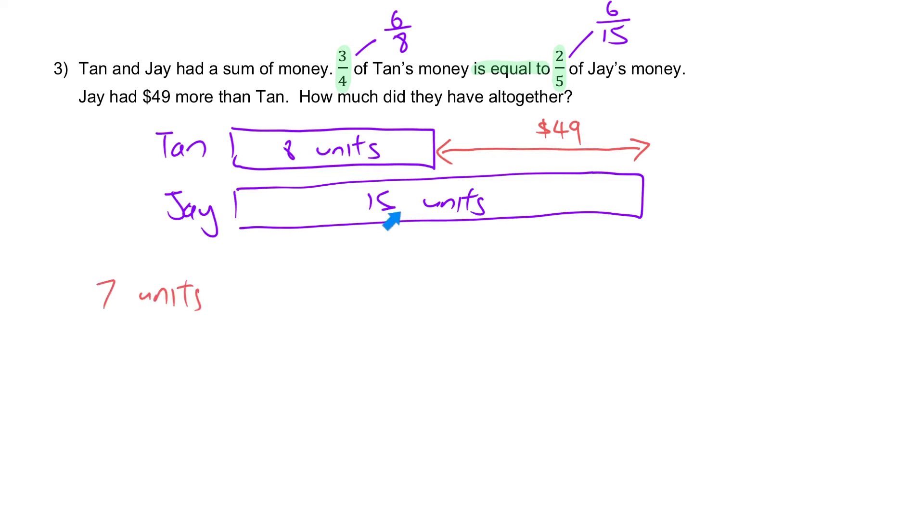So this must be the difference of $49, seven units, the difference, 15 minus 8 units. So seven units is equal to $49. One unit: 49 divided by 7 will give you $7.